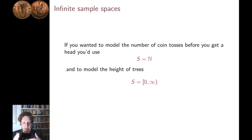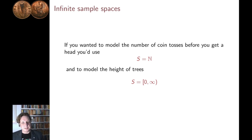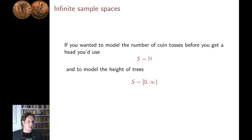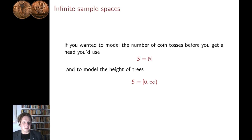Those are all finite discrete examples. Often probability theory will deal with larger sample spaces. There are different ways you can make it larger. One is to keep it discrete — so the individual outcomes are separate from each other — but make it infinite. Changing to an infinite set of outcomes, provided they're still discrete, doesn't change the theory that much. So one example would be: you're going to toss a coin until you get a head. Then the possible outcomes include any number of tosses, and the sample space should be all of the natural numbers.